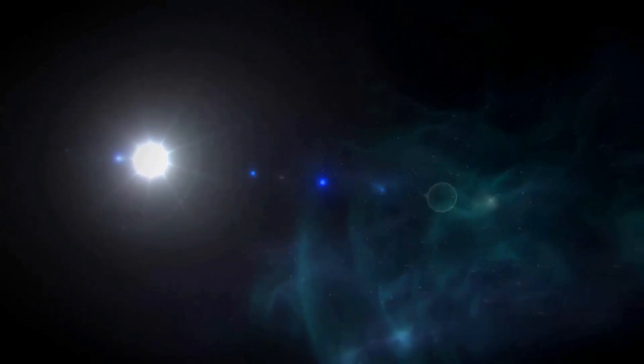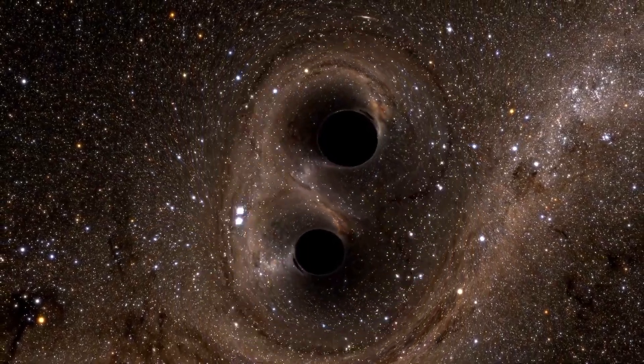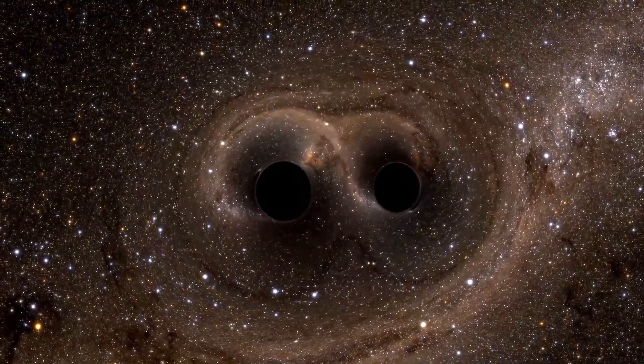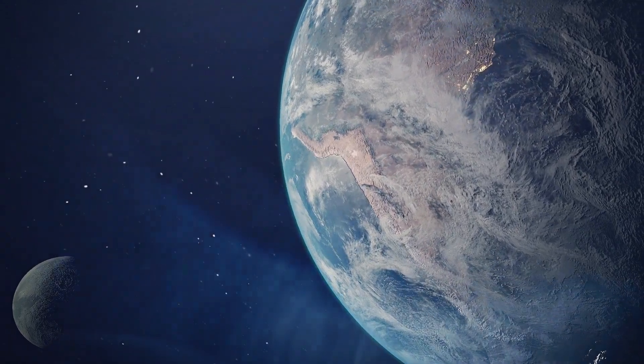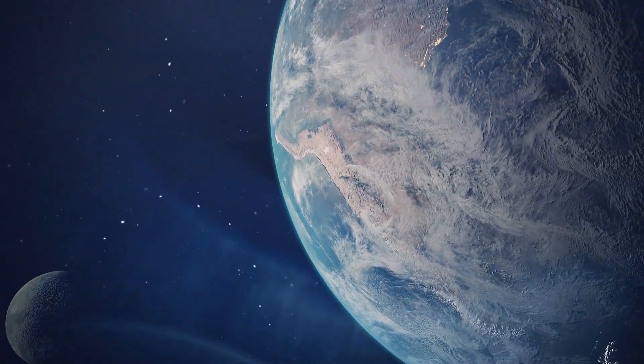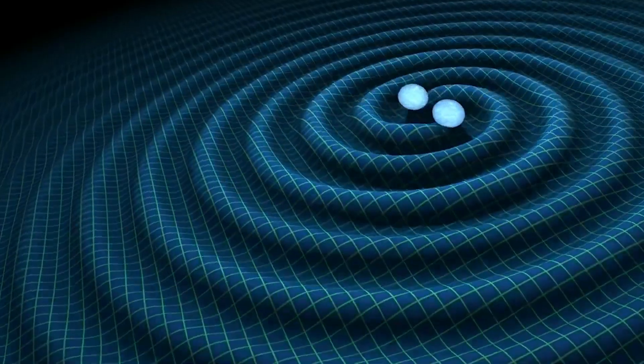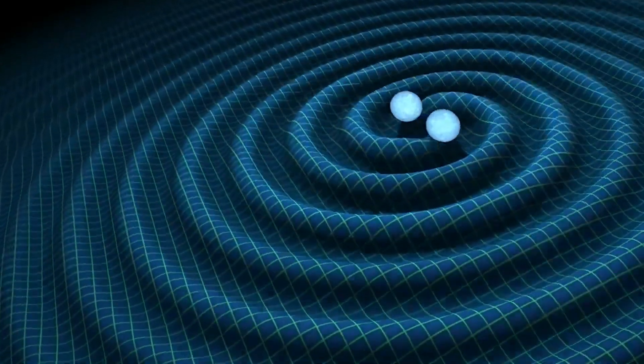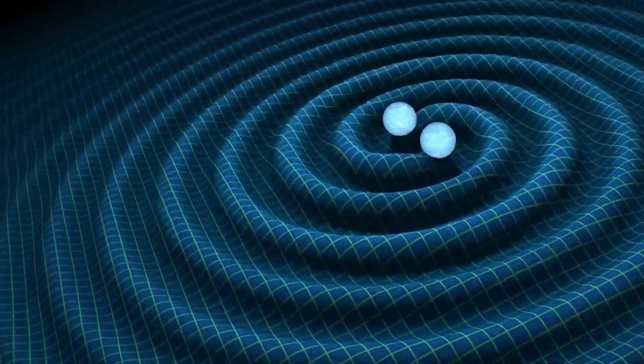The problem is, the quantum theory does not unify well with general relativity. See, general relativity of Einstein is based on smooth surfaces. The quantum theory is based on chopping things up into particles. That's the opposite of Einstein's philosophy of smooth curves representing space time. That's why it's so difficult.